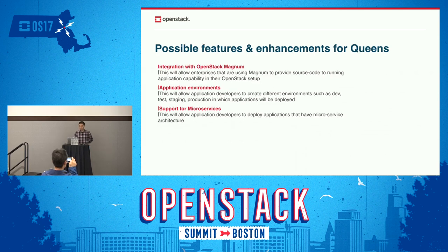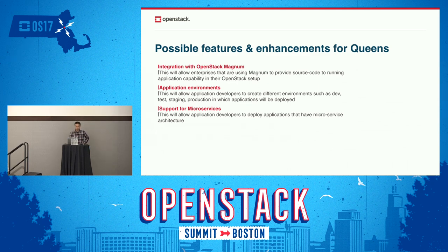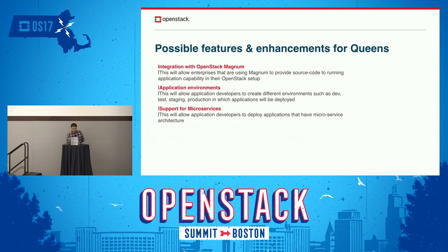Next are the possible features and enhancements planned for the Pecan release. We may integrate with OpenStack Magnum, which will allow enterprises to provide a mechanism for going from source code to a running application within an OpenStack setup. We will also support application environments, allowing application developers to create different environments such as dev, test, stage, and production in which applications will be deployed. Additionally, we will support microservices, enabling developers to deploy applications with microservice architectures.